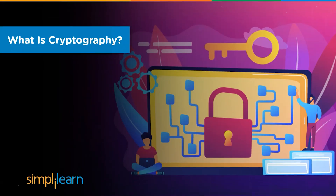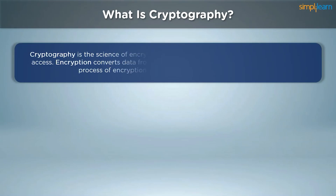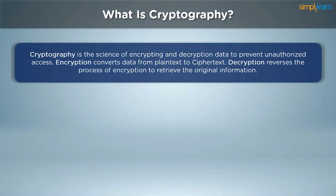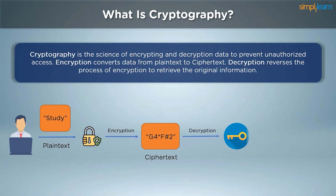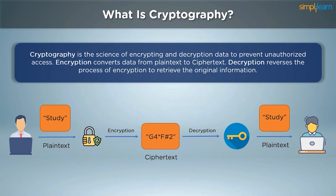Let's have a small recap before we move ahead. Cryptography is the science of encryption and decryption of data to prevent unauthorized access. Encryption is the process of making the plain text unreadable to any third party, which generates the ciphertext. Decryption is the process of reversing the encrypted text back to its original readable format — the plain text. As you can see in the image, the plain text in the example is the word 'study'. The sender uses an encryption key to convert the plain text into ciphertext, and the receiver converts the ciphertext back to the plain text using a decryption key.